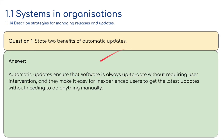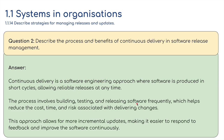State two benefits of automatic updates: first, automatic updates ensure the software is always up to date without requiring user intervention; and second, they make it easy for inexperienced users to get the latest updates without needing to do anything manually. For question two, continuous delivery is a software engineering approach where software is produced in short cycles, allowing reliable releases at any time. The process involves building, testing, and releasing software frequently, which helps reduce the cost, time, and risk associated with delivering changes. This approach allows for more incremental updates, making it easier to respond to feedback and improve the software continuously.